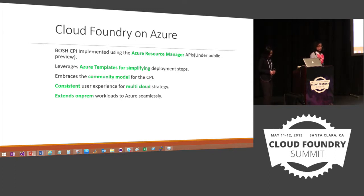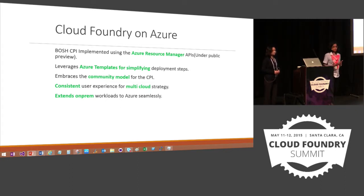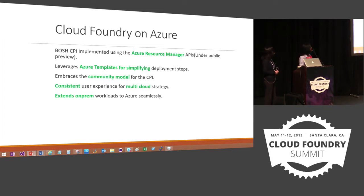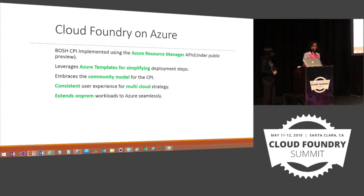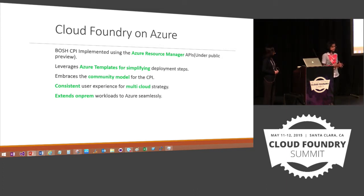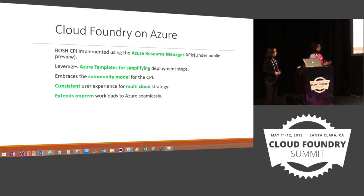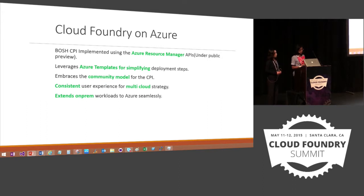Before we take a look at what we are supporting, this is a high-level picture of what we are going to be enabling with this announcement. Azure is providing a Bosch CPI implemented using the new Resource Manager APIs. We also leverage Azure templates for simplifying the deployment steps. We have embraced the community model for supporting the CPI, and we have provided a consistent user experience for multiple clouds. The experience you get for deploying Cloud Foundry in any cloud platform is consistent with what you'll get in Azure. Using Cloud Foundry in Azure, you can also extend your on-prem workloads to cloud.